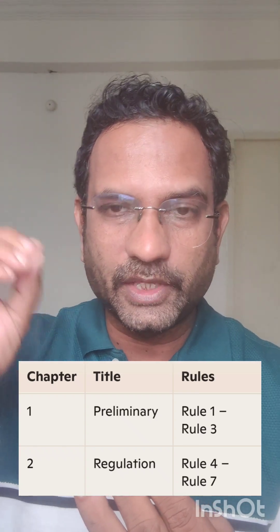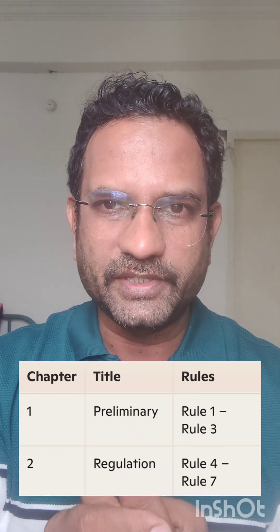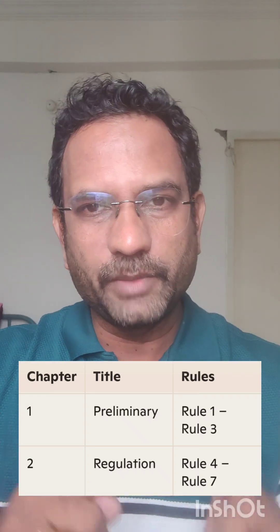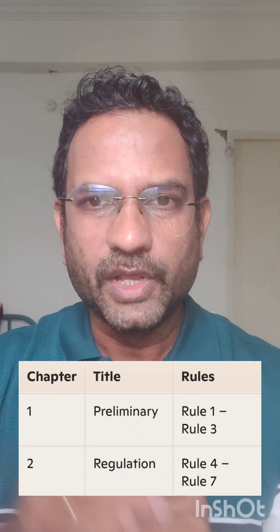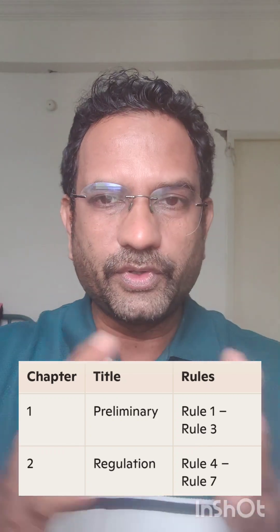Chapter 2 is about regulation of medical devices. It covers classification of medical devices — there are four classes: Class A, Class B, Class C, and Class D. Rules 4 to 7 are included in this chapter, with Rule 4 specifically covering classification.